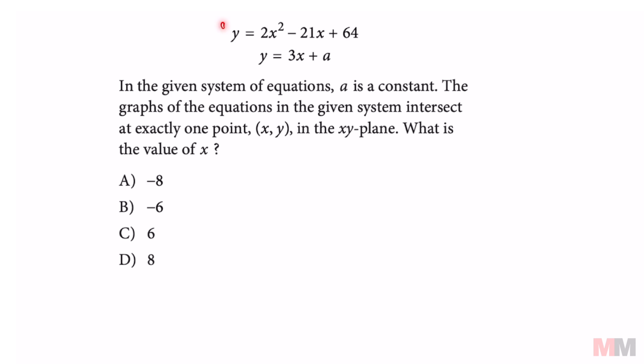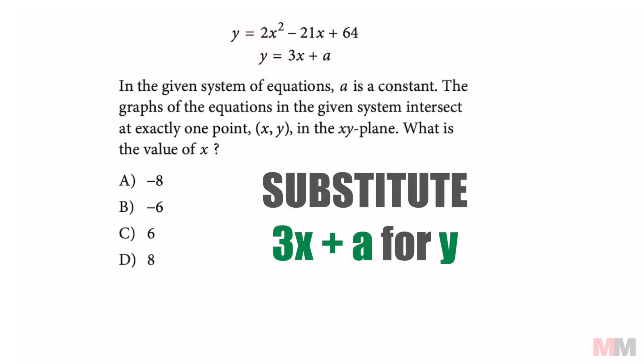Since we have a system up here, and both of them are solved for Y, we can combine these two information somehow by using substitution. So we're going to substitute 3X plus A into the letter Y up here, and it's going to look like this.